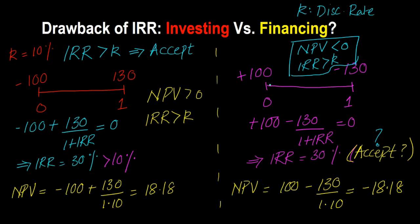This is a situation in which you have a project with unconventional cash flows. In a previous video we talked about conventional cash flows — that is a project where you have one cash outflow followed by inflows. Here you have a cash inflow happening first and then an outflow, so this is not a conventional cash flow. In fact, this looks less like an investment and more like borrowing — you are getting money up front and then spending money later, like taking a loan and making a payment.